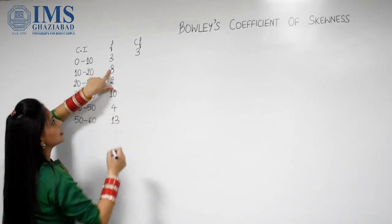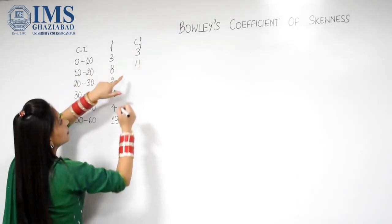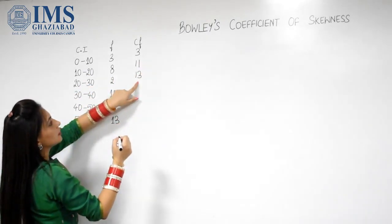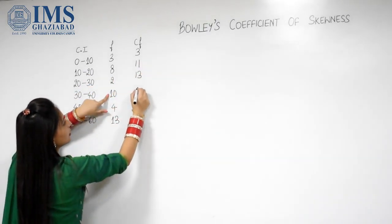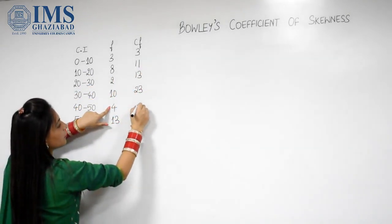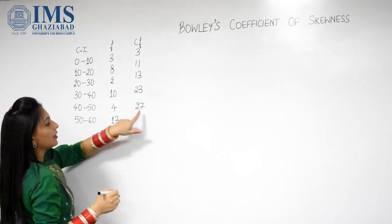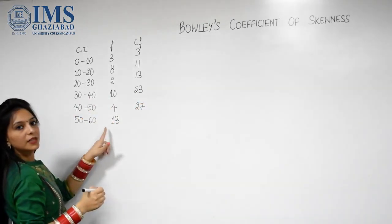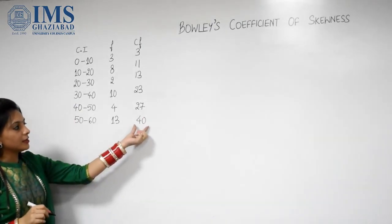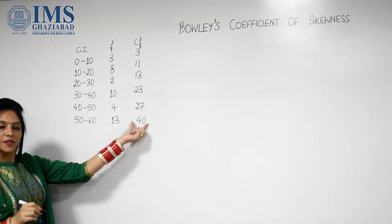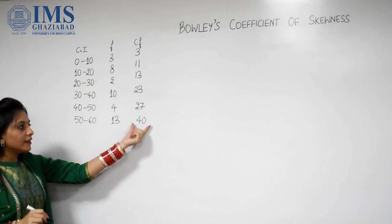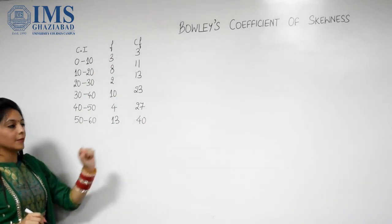Now 3 plus 8 gives 11. Then 11 plus 2 is 13. Then 13 plus 10 is 23. Then 23 plus 4 is 27. And 27 plus 13 gives us 40. This last term of CF is actually the sum of frequencies. We will consider this as our N, so N equals 40.